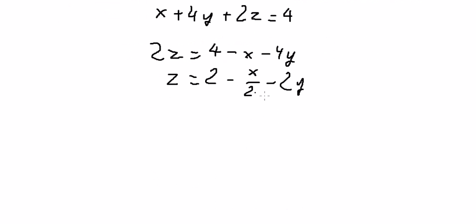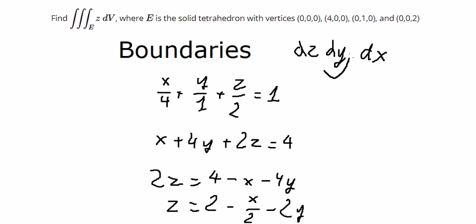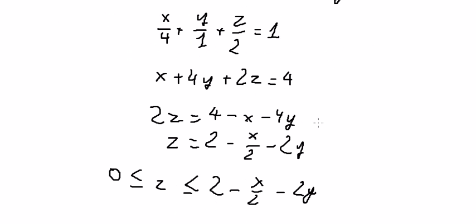We divide both sides by 2, so the boundary of z goes from 0 to 2 minus x over 2 minus 2y.